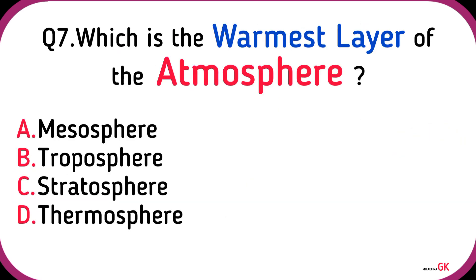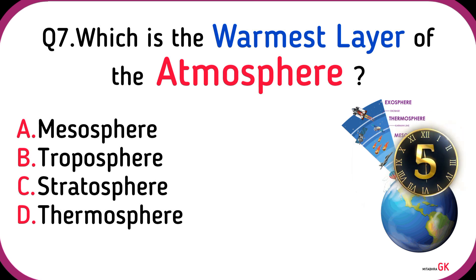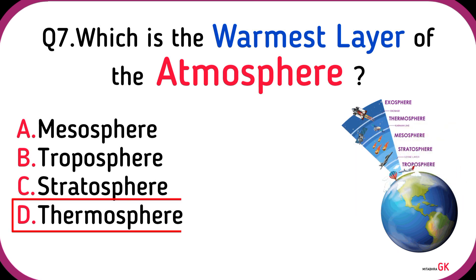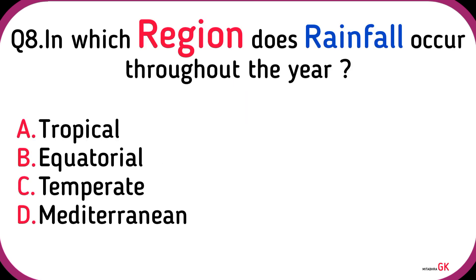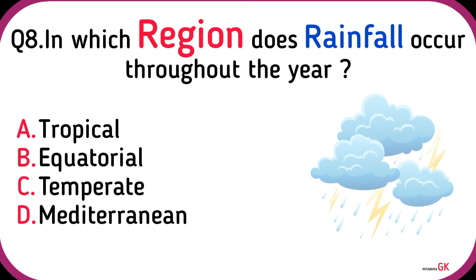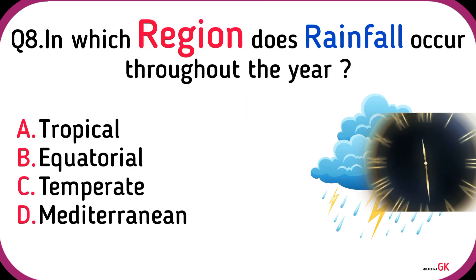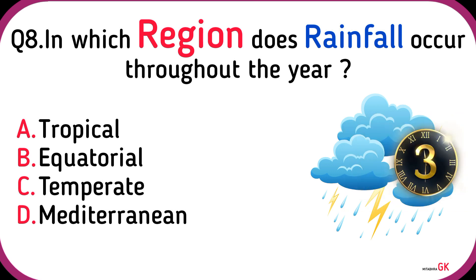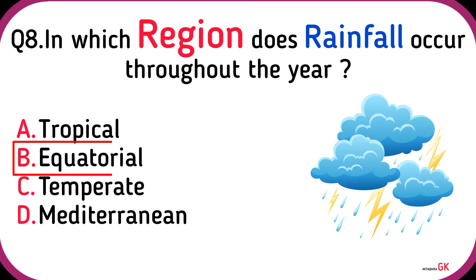Which is the warmest layer of the atmosphere? Thermosphere. In which region does rainfall occur throughout the year? Equatorial.